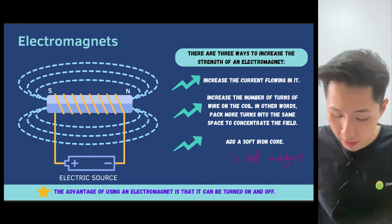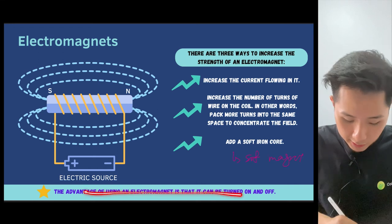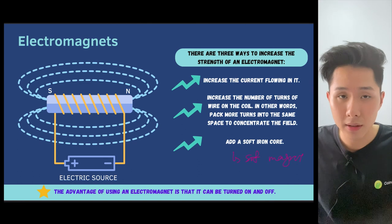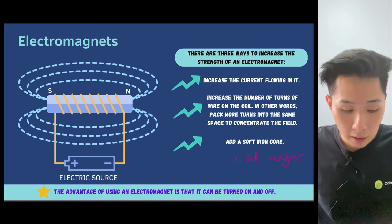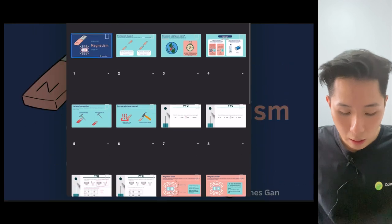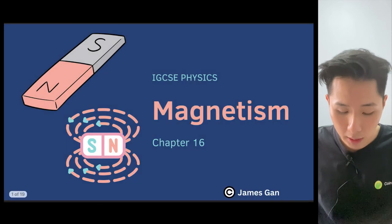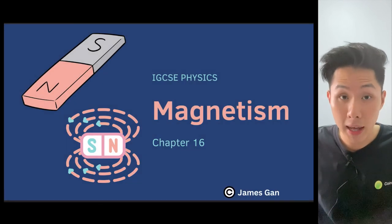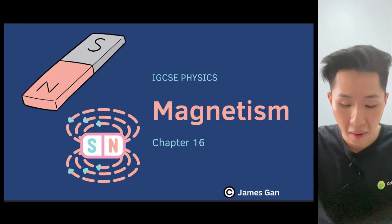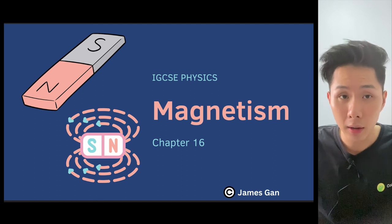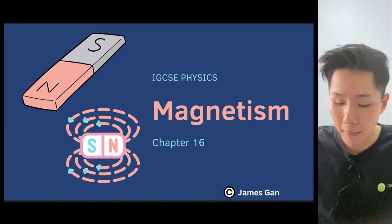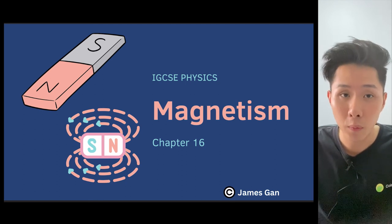The advantage of using an electromagnet is that it can be turned on and off. And that's all about magnetism — we looked into how a compass works, and also the magnetic field of different magnets. That's the end of this video. I hope you learned a lot from it. Please comment down if you have any doubts. I'll see you all in the next video. Thank you so much for watching.